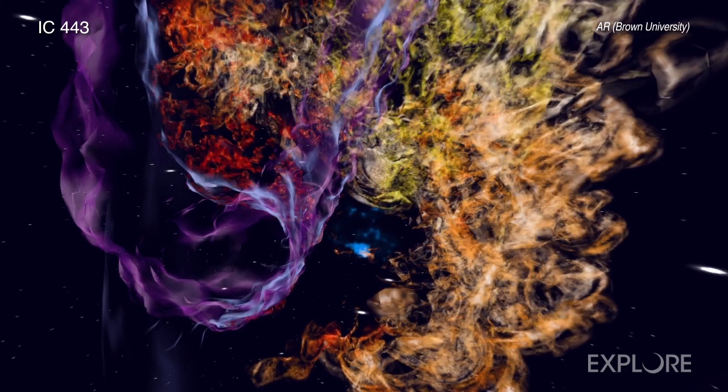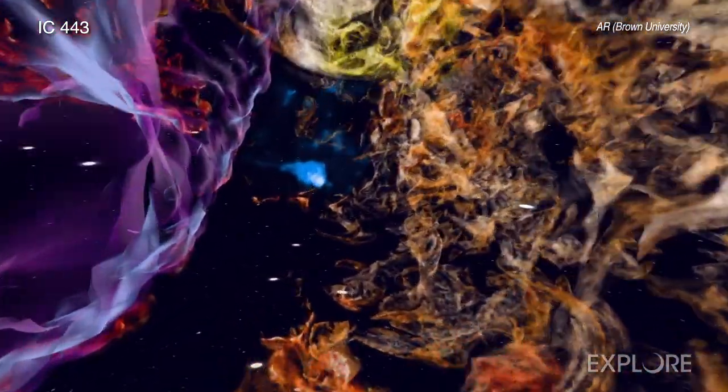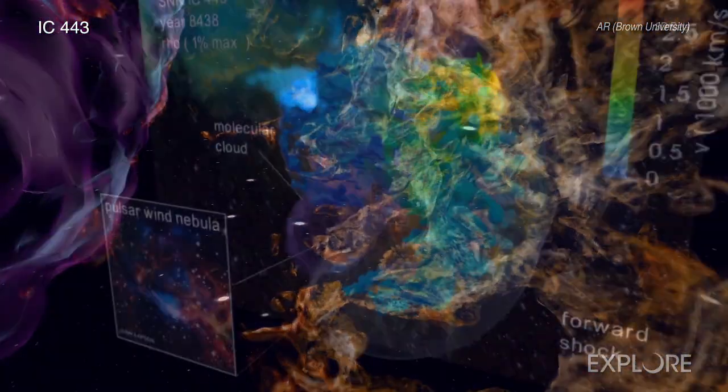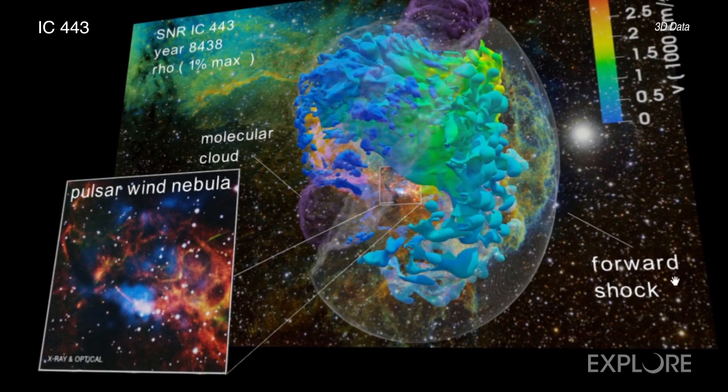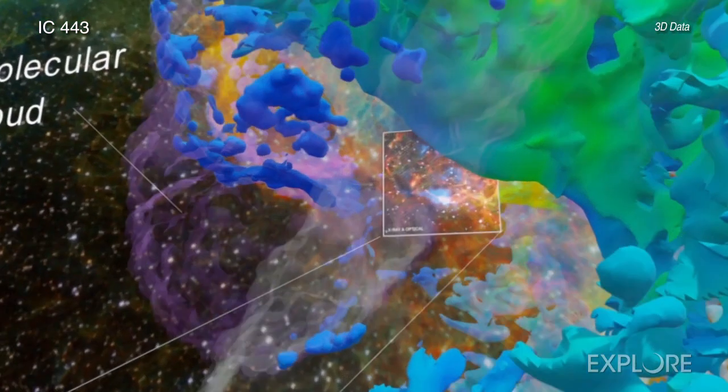There are several versions of this 3D model of IC443. In one developed by scientists, we can see that the shockwave and the remains of the star have collided with the gas cloud and are now passing through it.